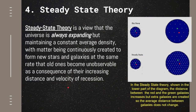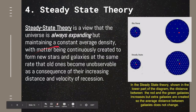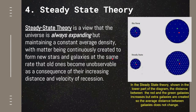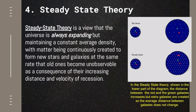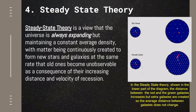The steady state theory is a view that actually contradicts the Big Bang theory. It says that the universe has always been expanding while maintaining a constant average density of materials, in which matter is continuously created to form new stars and galaxies at the same rate that old ones become unobservable as a consequence of their increasing distance and velocity of recession. According to the Big Bang, there used to be a condensed mass of energy that expanded into space. While in steady state, as the space expands, more and more matter and galaxies are being created in that space.